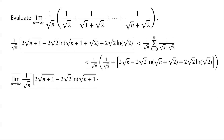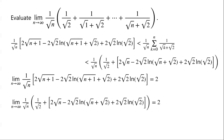The limit of 1 over root n times 2 root n plus 1 minus 2 root 2 ln of root n plus 1 plus root 2 plus 2 root 2 ln of root 2, as n tends to infinity, equals 2. And the limit of 1 over root n times 1 over root 2 plus 2 root n minus 2 root 2 ln of root n plus root 2 plus 2 root 2 ln of root 2, as n tends to infinity, also equals 2. So by the squeeze theorem, the limit of 1 over root n times the sum of 1 over root k plus root 2 from k equals 0 to n, as n tends to infinity, equals 2, since its lower and upper bounds both tend to 2. So the limit that we want to evaluate is 2.